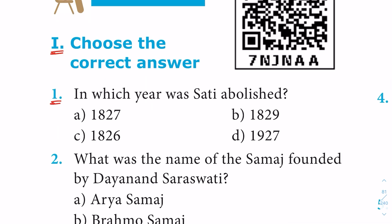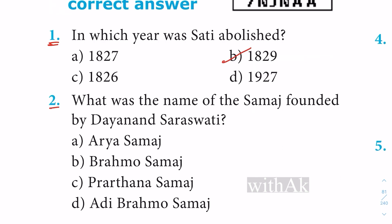First question: In which year was Sati abolished? Option B: 1829. In the Sati abolition, there are two key figures: Raja Ram Mohan Rai and William Bentinck. William Bentinck passed the legislation.